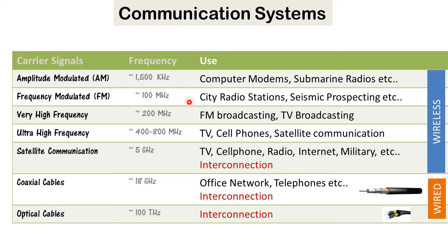Very high frequency (VHF) waves are used for FM broadcasting and TV broadcasting. Ultra high frequencies are used for satellite communication, cell phones, and TV.